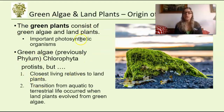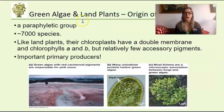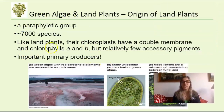Remember that algae are the closest relatives to land plants, and we'll discuss that transition from aquatic life to a terrestrial environment. Algae are a paraphyletic group, meaning not all descendants share the same traits like chloroplasts, the double membrane, and chlorophyll A and B. There are also many different types of algae, and we talked about secondary and primary endosymbiosis.